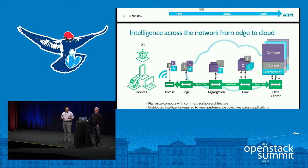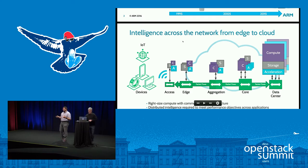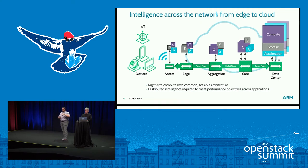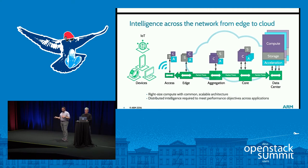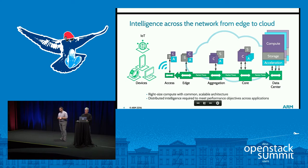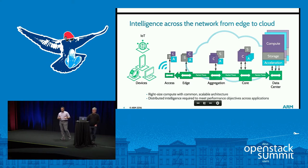Our vision for the use of ARM — we have something called the Intelligent Flexible Cloud. We believe you're going to have compute in the right location where it's going to be used, with different combinations of compute, storage, and networking, depending on whether it's in the data center, throughout the network, all the way to the edge, the base stations. ARM as a technology is already pervasive in the network, and we're starting to see that ramp in the data center — that end-to-end solution is going to be important because people need to make decisions closer to where the data is being generated.